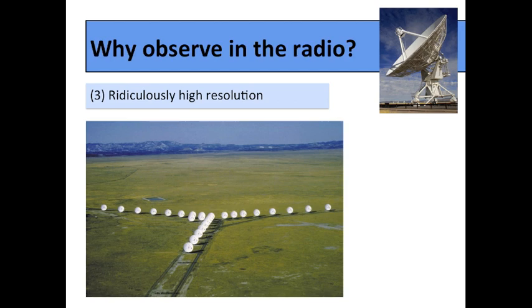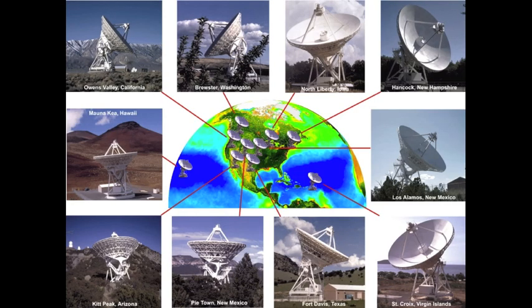You could even put those telescopes across the whole North American continent, put one in Hawaii, put one in the Virgin Islands, and get what is called the Very Long Baseline Array, which has the resolution ability to read a newspaper in Los Angeles from New York.